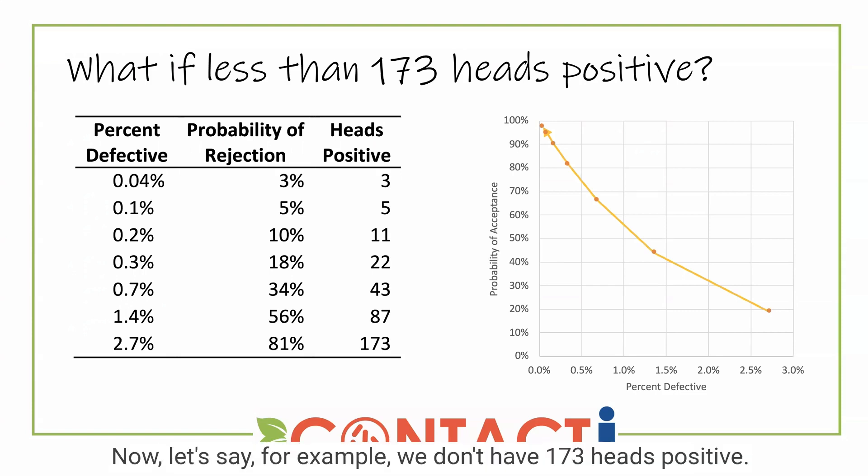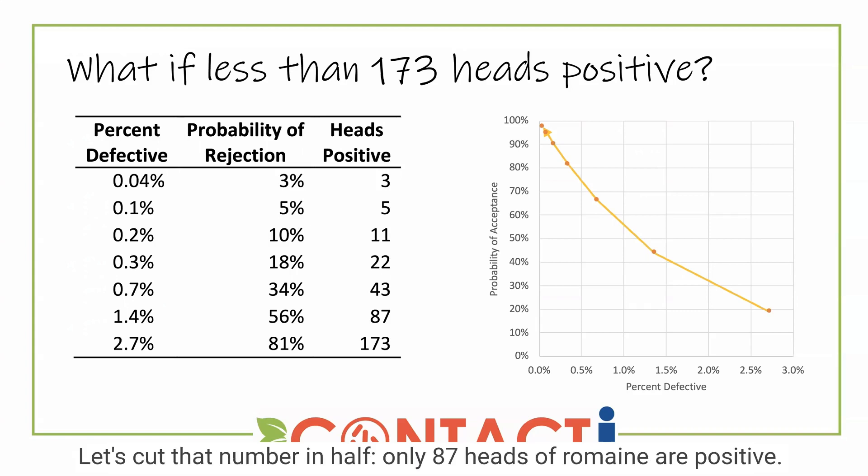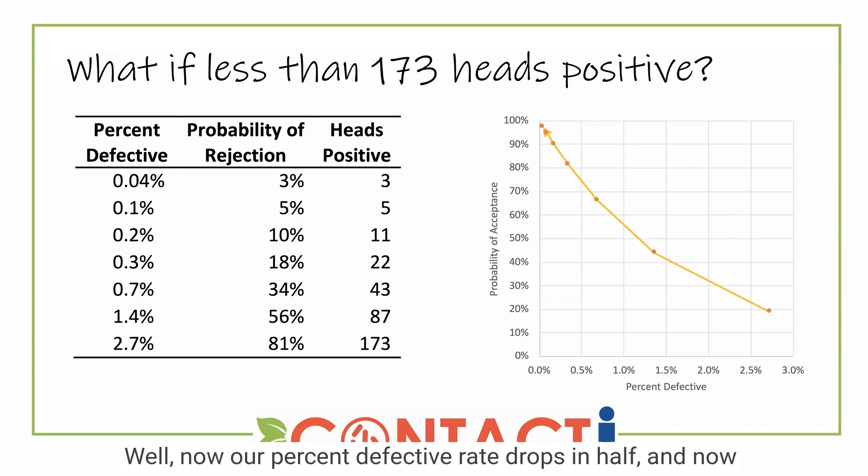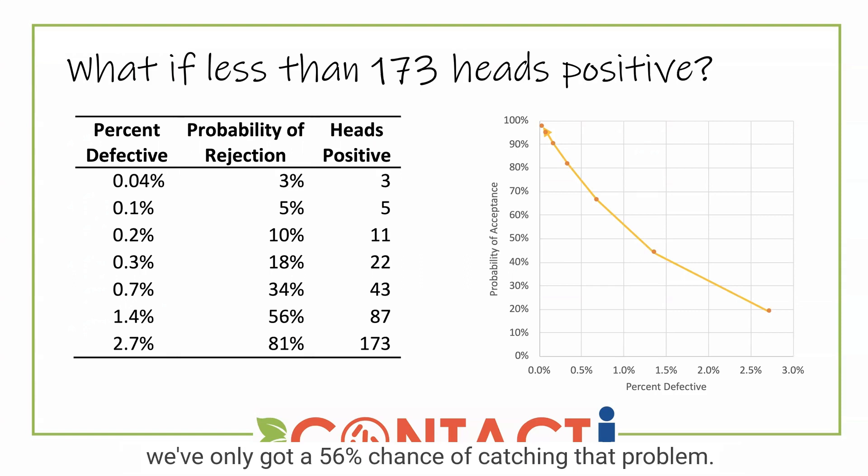But remember that that assumption relies on all of the heads of lettuce in that region being positive. Now, let's say we don't have 173 heads positive — let's cut that number in half. Only 87 heads of romaine are positive. Now our percent defective rate drops in half, and we've only got a 56% chance of catching that problem.